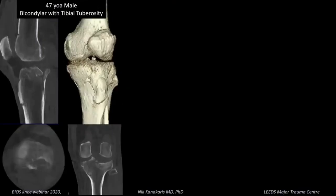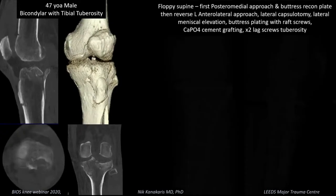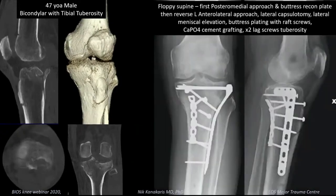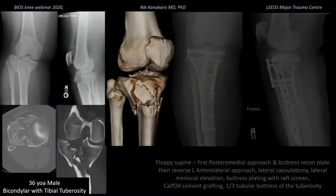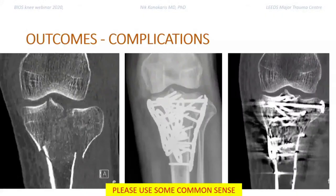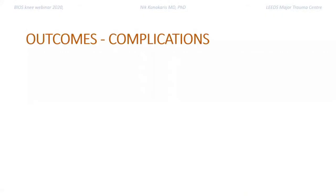Another example is a fracture with tibial tuberosity involvement — the so-called Schatzker 7. The tibial tuberosity must also be addressed. Here it was lagged, first posteromedially and then anterolaterally. Another example where a comminuted tuberosity was buttressed with a one-third tubular plate.